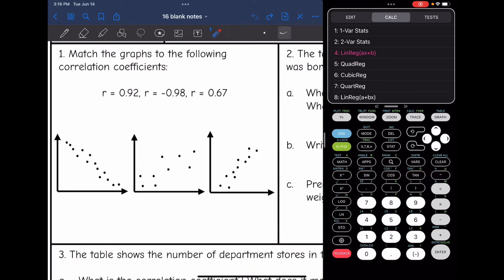Let's take a look at number 1. It says match the graphs to the following correlation coefficients. I have one negative graph and two positive graphs. I already know that the negative number is going to go with the negative graph. So this one would be negative 0.98, which makes sense because that's negative data, and that correlation is pretty strong.